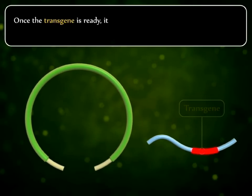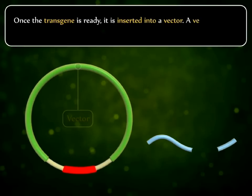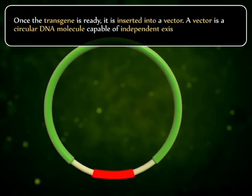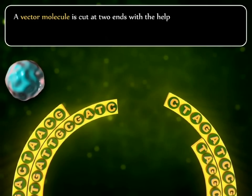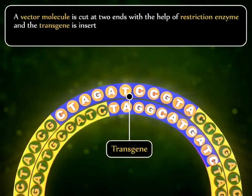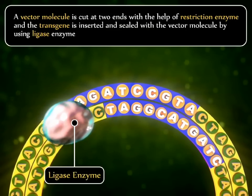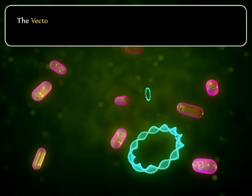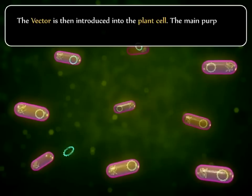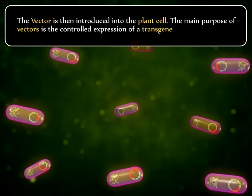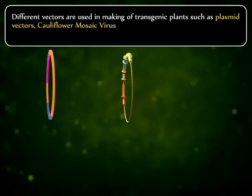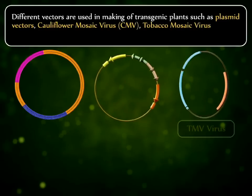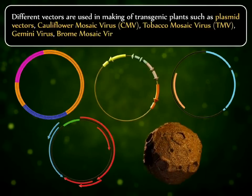Once the transgene is ready, it is inserted into a vector. A vector is a circular DNA molecule capable of independent existence and replication. A vector molecule is cut at two ends with the help of a restriction enzyme, and the transgene is inserted and sealed within the vector molecule using a ligase enzyme. The vector is then introduced into the plant cell. The main purpose of vectors is the controlled expression of a transgene inside the host cell. Different vectors are used in making transgenic plants, such as plasmid vectors, Cauliflower Mosaic Virus (CMV), Tobacco Mosaic Virus (TMV), Gemini virus, and Brome Mosaic Virus (BMV).